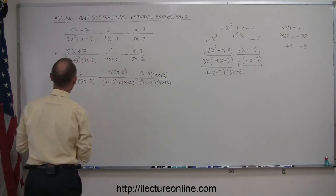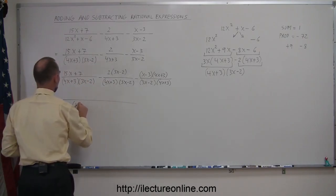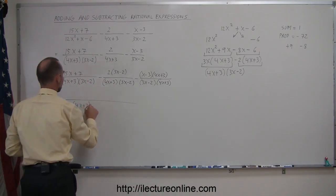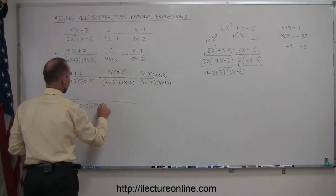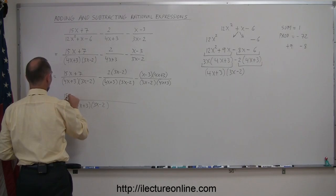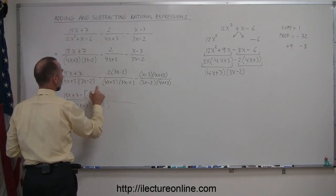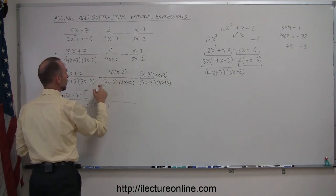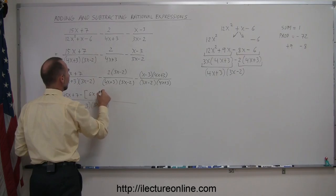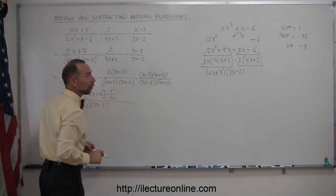But now notice that all three denominators are common. So I can write this whole thing over one single denominator. So this is equal to over the denominator of (4x + 3) times (3x - 2). Here, I have a 15x + 7. Here, I have minus the product of these. So that would be 2 times 3x, which is 6x. And 2 times a negative 2, which is a negative 4.